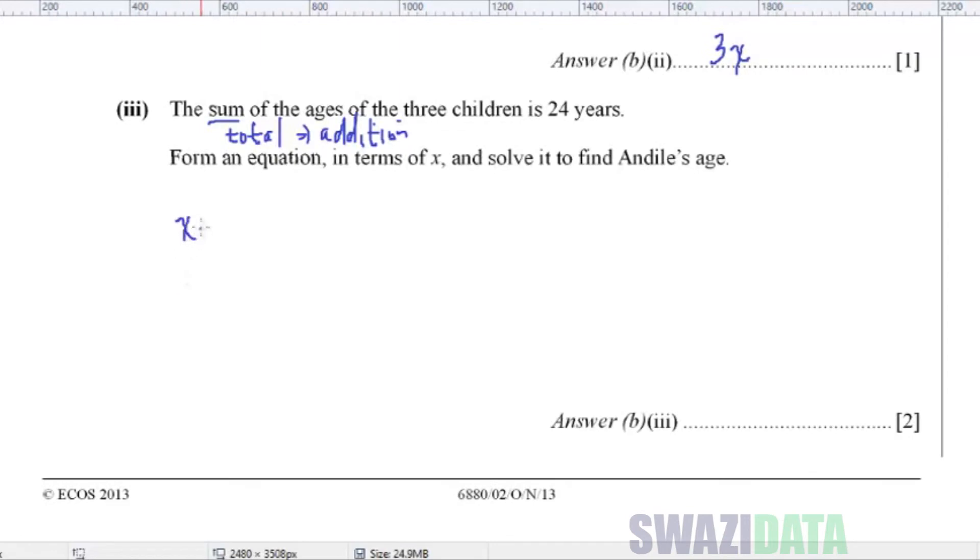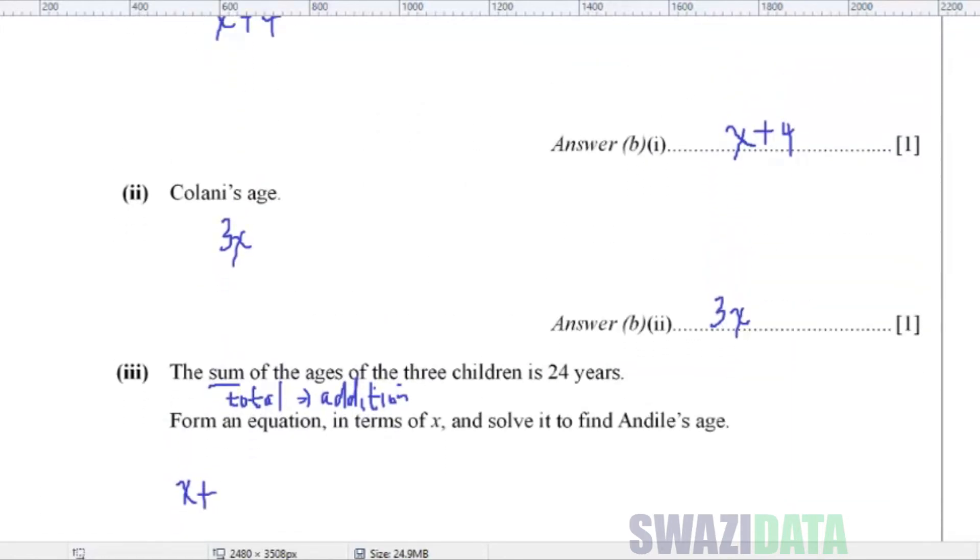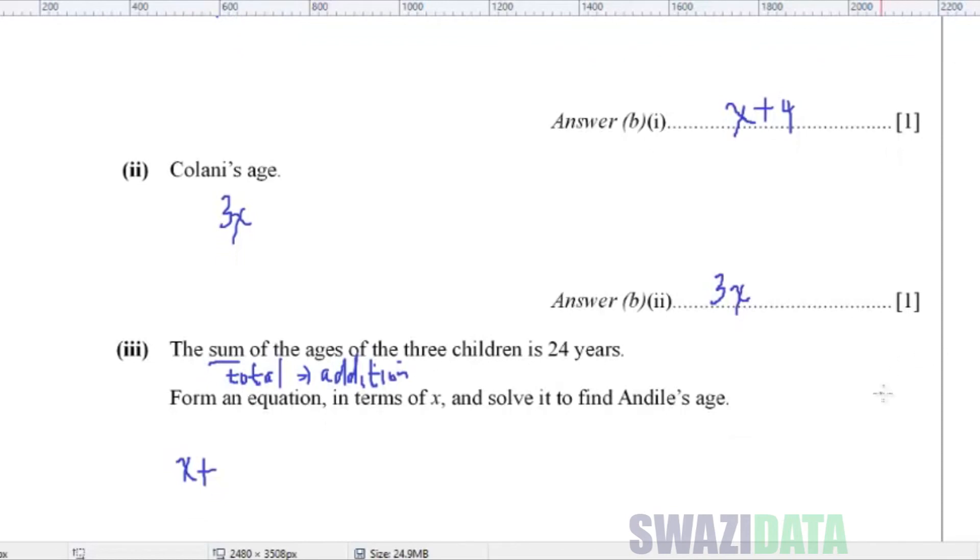It means Andile, which is X, plus the next child, which is Bongane, it's X plus four. So plus Bongane's age, X plus four, plus Kolane's age, which is 3X, should give us 24 years.